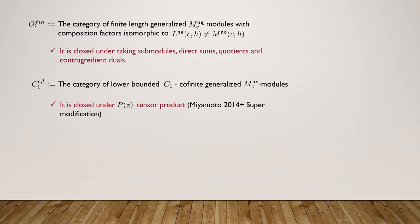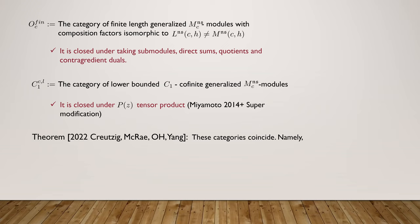What we proved in our work in progress is that these two categories coincide. It would be very hard to show directly that O_{C-finite} is closed under the P(z) tensor product, but we avoid doing that by proving that in the case of the N equals 1 super Virasoro algebra these two categories are the same.